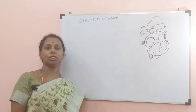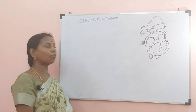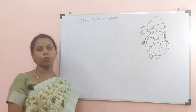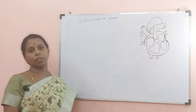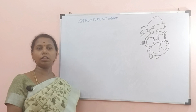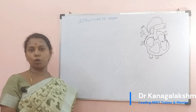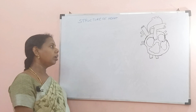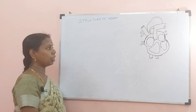Welcome to KL Biology. Today we are going to discuss the structure of the heart. Before that, in the last video we discussed a children's example for open circulatory system. Many of you answered it is Arthropoda — mollusca and all these are having open circulatory system only. So let us see today the structure of the human heart.